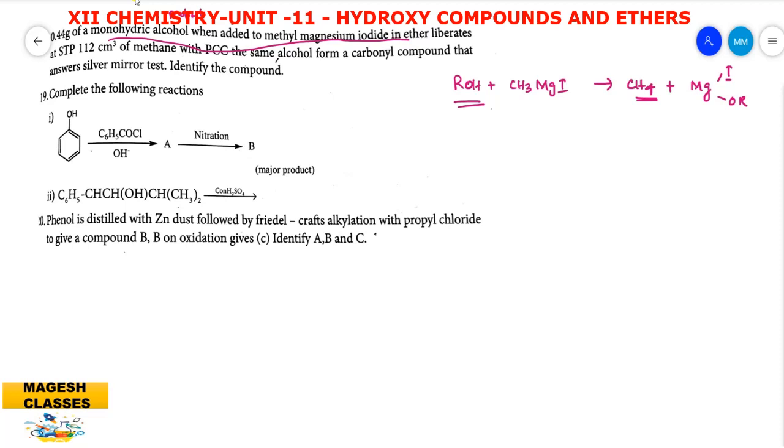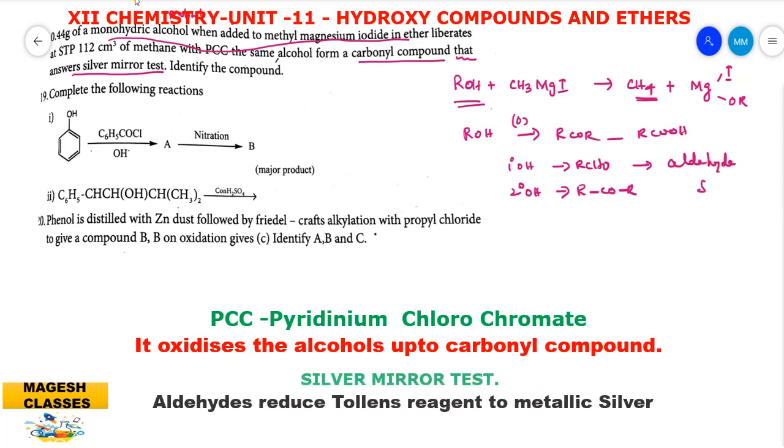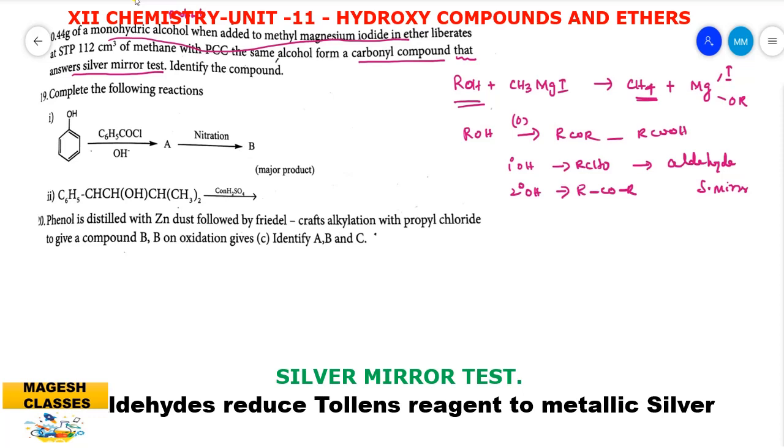From this information, we can find out what is the molecular weight. Then this information that is PCC, that is pyridinium chlorochromate, it is the oxidizing agent. So what is the concept of oxidation? Whenever the alcohol is oxidized, you get the carbonyl compound. The primary alcohol gives aldehyde. And the secondary alcohol on oxidation gives the compound ketone. Here the additional information that answers silver mirror test. The silver mirror test is the test for aldehyde. So if it is aldehyde, what is the starting product? It is primary alcohol.